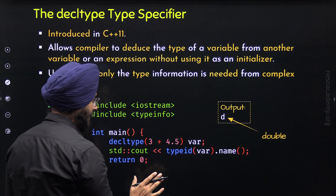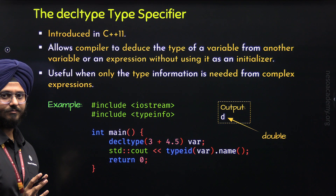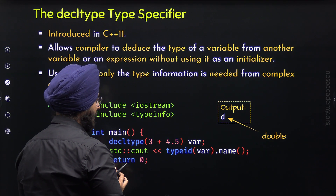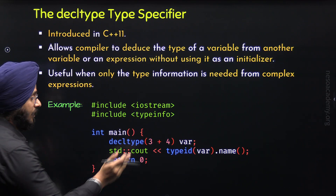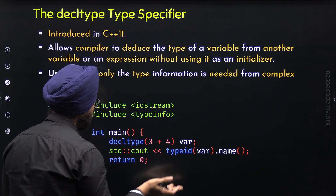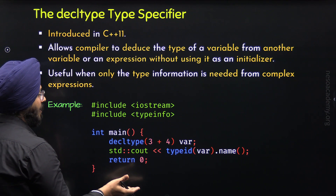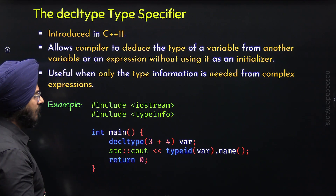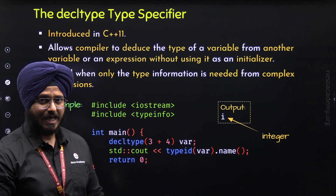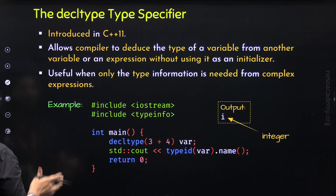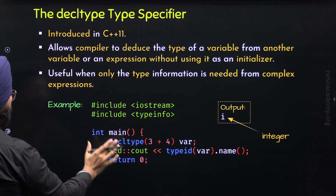This confirms our program is working correctly — the data type of this variable is double. Now let's modify the program a bit. If instead of 3 + 4.5 we have 3 + 4, we now have two integer values. Clearly, if we evaluate this expression, we get an integer value. So the data type will be int, deduced automatically by the compiler. When we execute this program, we will get 'i' as the output, which represents an integer. So with these examples, we have learned what the decltype type specifier is and how to use it in C++ programs.